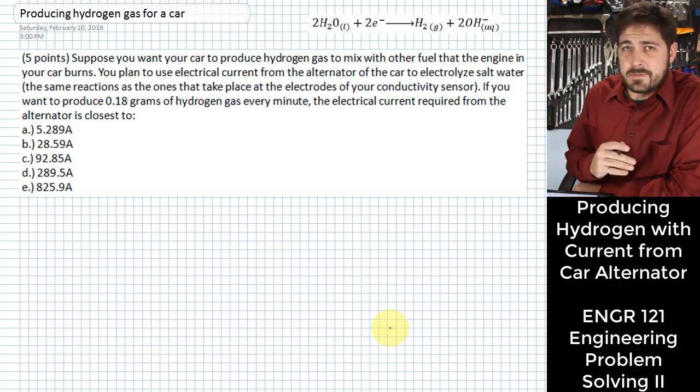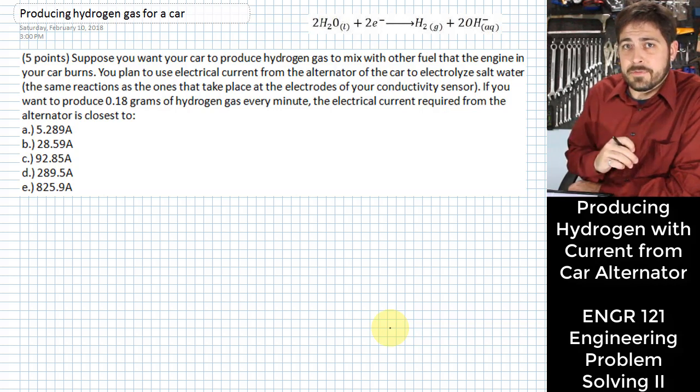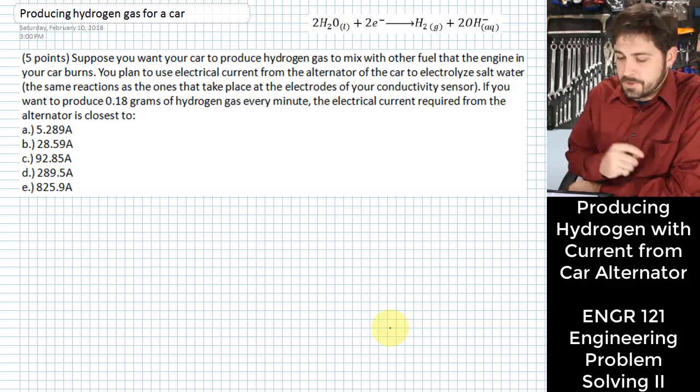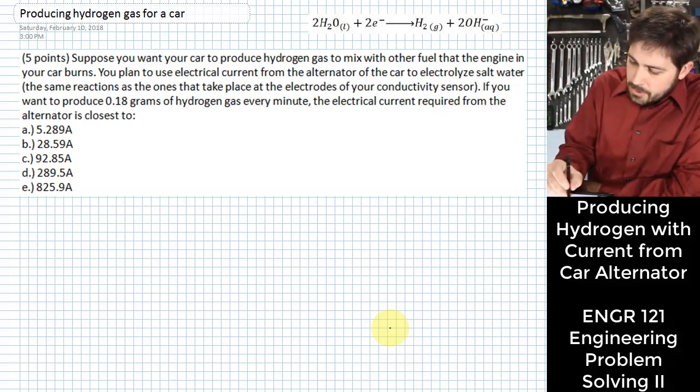And I was curious when they asked me about that, how much energy would it take to make that hydrogen in the first place? And that's what this problem basically kind of gives us in the form of how many amps of current would it take out of the alternator. So here it is.